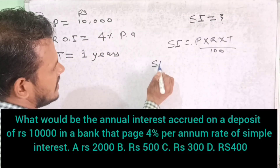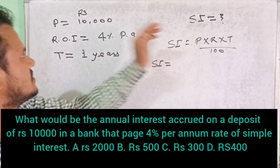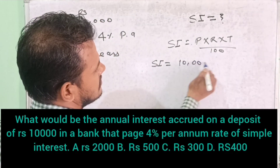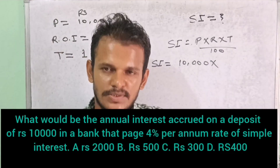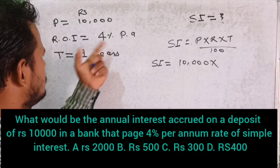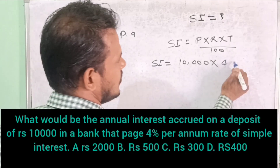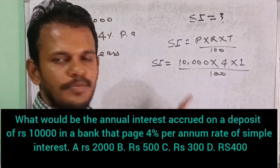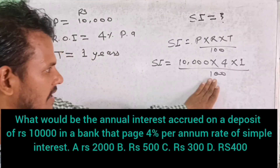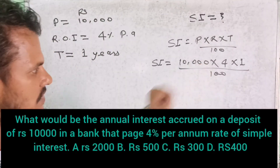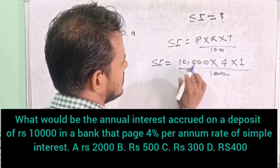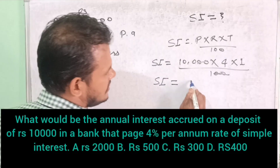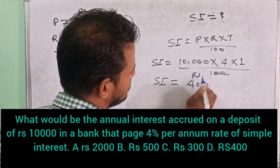So the simple interest will be: Principal is 10,000, Rate of interest is 4%, Time is 1 year. 4% means divided by 100. The zeros get cancelled, and 100 into 4 gives us simple interest equal to Rs. 400.